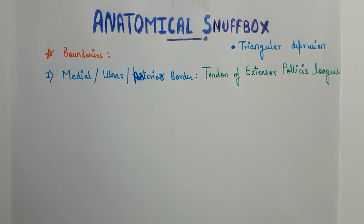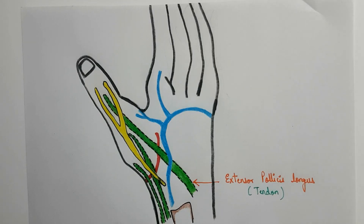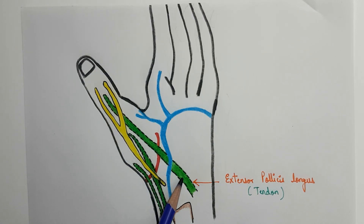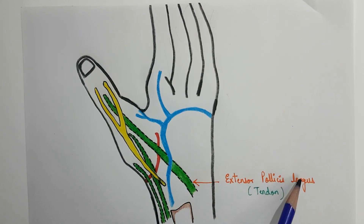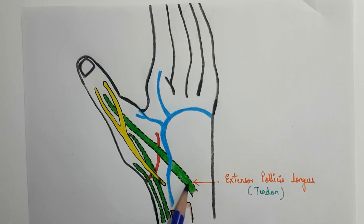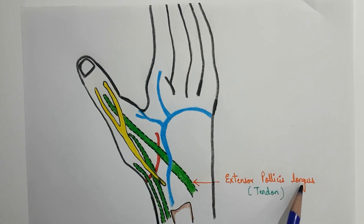Now let us take a look at the diagram of the anatomical snuff box. In this diagram you can easily see the medial, ulnar, or posterior border is formed by the tendon of the extensor pollicis longus. This is the triangular depression known as the anatomical snuff box, and this is its medial border formed by the tendon of extensor pollicis longus.